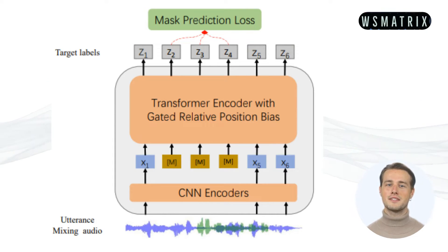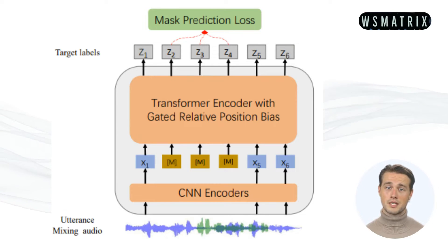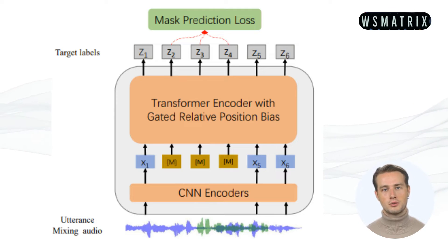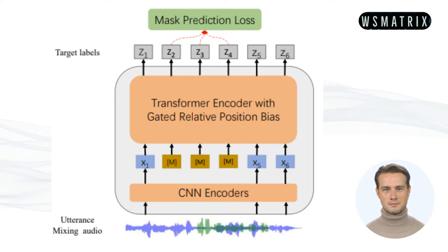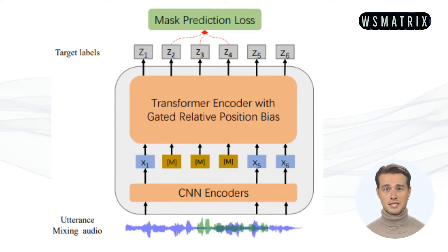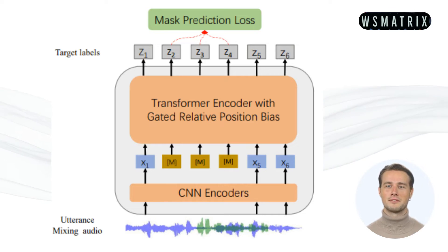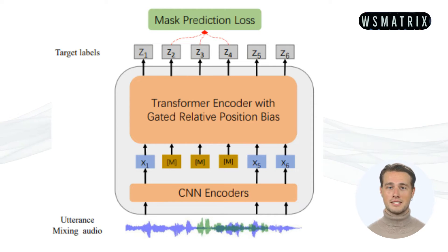The transformer architecture is well suited for speech processing because it can learn long-range dependencies in the input audio. Third, a novel method called gated relative position bias. WAV-LM adds a gated relative position bias to the transformer architecture. This helps the model to learn the ordering of the input audio. Fourth, it has a large vocabulary. WAV-LM has a large vocabulary of 320K tokens. This allows the model to represent more complex concepts.